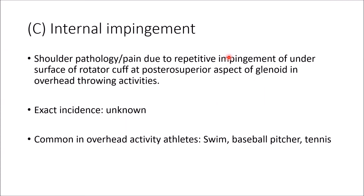The next topic is internal impingement. Internal impingement is a shoulder pathology involving pain due to repetitive impingement of the undersurface of the rotator cuff at the posterior-superior aspect of the glenoid during overhead throwing activities. The incidence is not well known, but it occurs in overhead athletes such as swimmers, baseball pitchers, and tennis players — for example, during the serve.